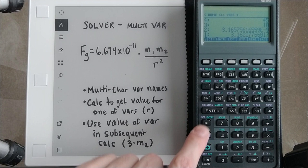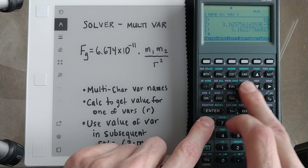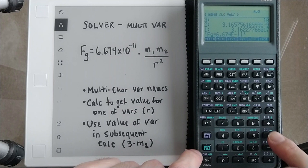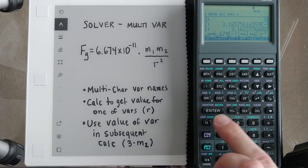You can just type it. Oops, I need to start with a quote mark. And we're going to do f of lowercase g equal 6.674e to the negative 11 times lowercase m1 times lowercase m2 divided by lowercase r. Type that in and put it on the stack.